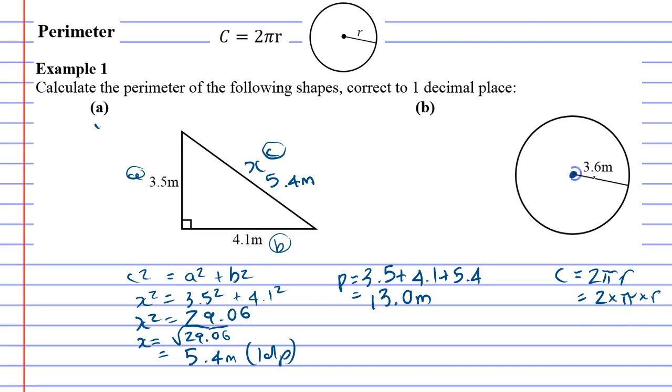Now r is the distance from the middle to the edge, which in this case is 3.6, so 2 times π times 3.6. We're just going to grab our calculator and work it out. 2 times π times 3.6 equals, and it comes out to one decimal place, it'll be 22.6 meters, which is the distance around the edge of the circle.